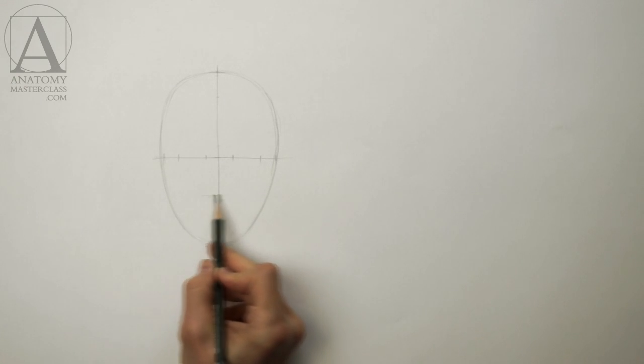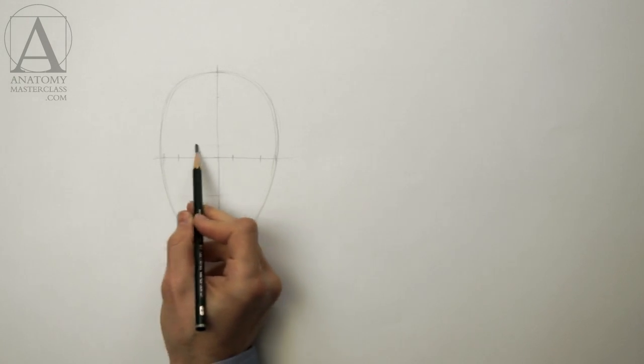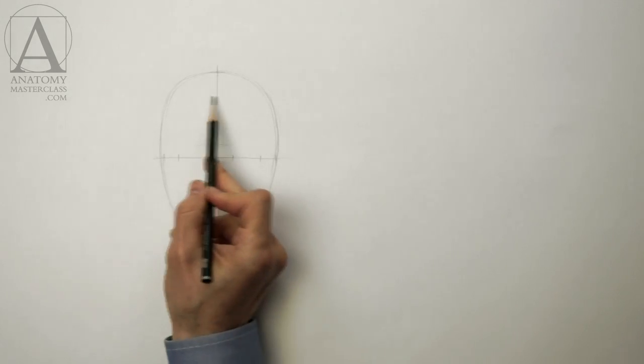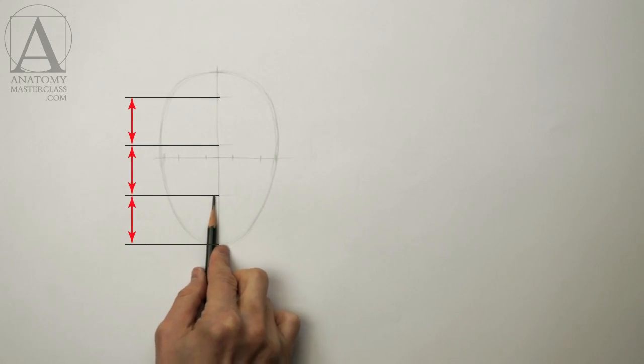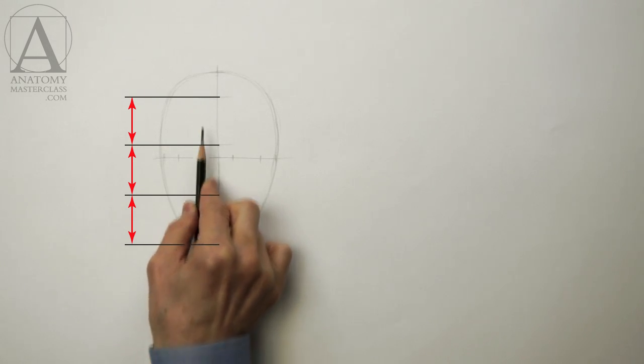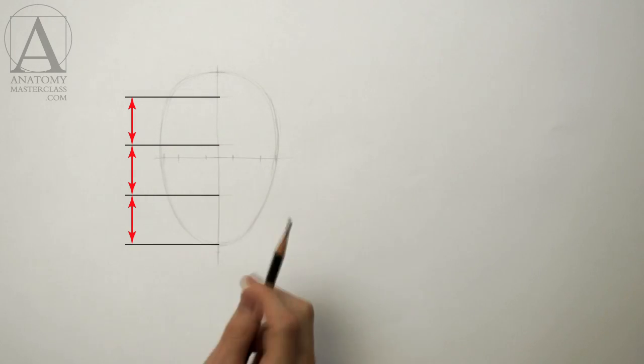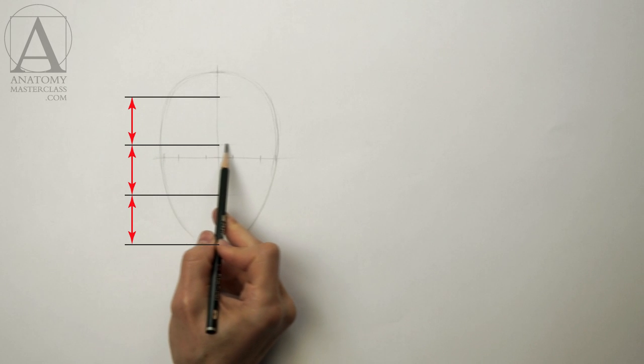Another important proportion of the human face that every fine artist must know is that the distance from the chin to the base of the nose is equal to the distance from the base of the nose to the eyebrow line, which in turn is equal to the distance from the eyebrow line to the line of the hair roots.